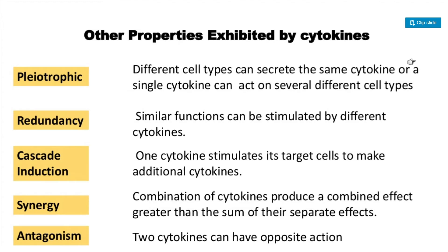Now, regarding the properties of cytokines: cascade induction means one cytokine stimulates its target cell to produce additional cytokines. Synergy means a combination of cytokines produces a combined effect greater than the sum of their separate effects. For example, in summer if you use a fan and also switch on the air conditioning, you get a combined cooling effect greater than either alone — similarly, multiple cytokines produce a greater combined result.